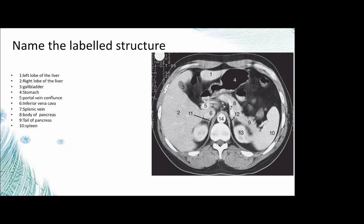Further structures identified on CT include: right adrenal gland (R-11), left adrenal gland, left kidney, and structure number 14. Students identify the uncinated (uncinate) process as structure A, the vertebral body as structure B, with additional labelled structures on the CT image being discussed.